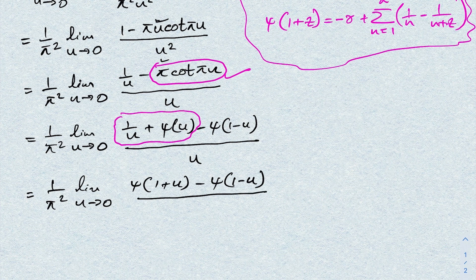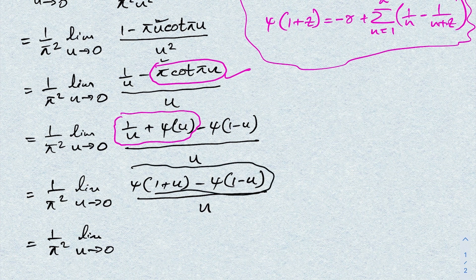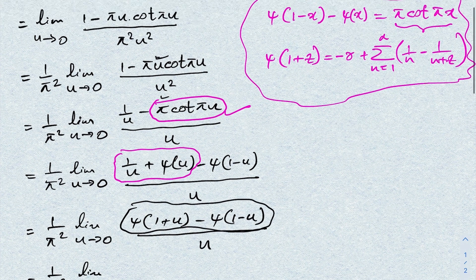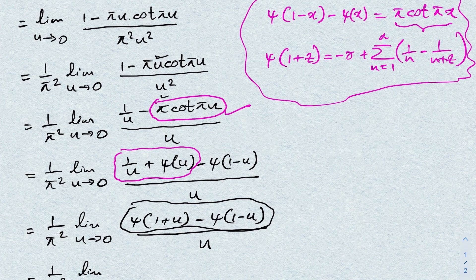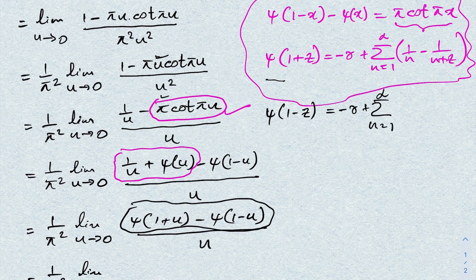Using the series representation, ψ(1+u) = −γ + Σ(1/n − 1/(n+u)). For ψ(1−u), we replace c with −u, giving ψ(1−u) = −γ + Σ(1/n − 1/(n−u)).